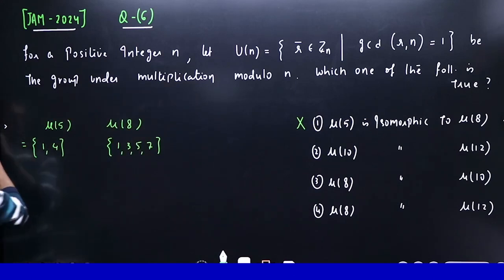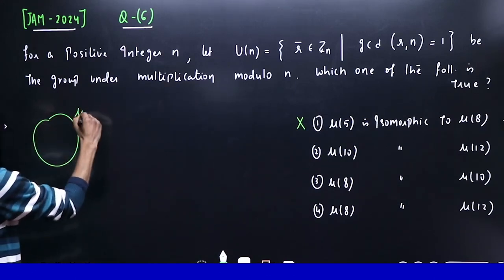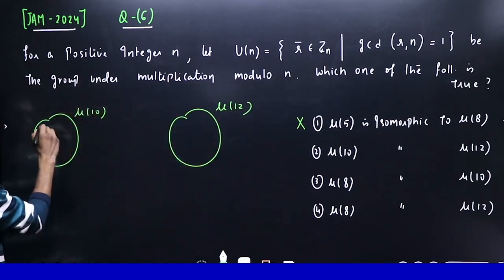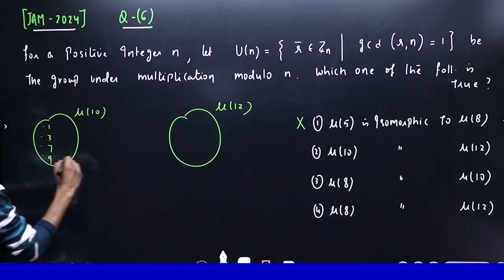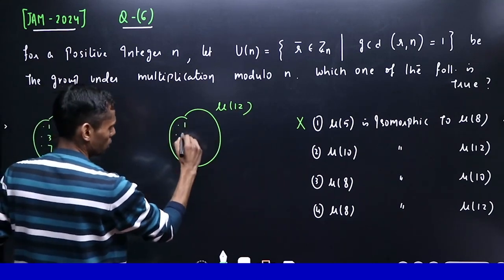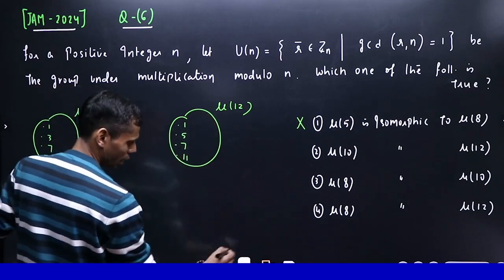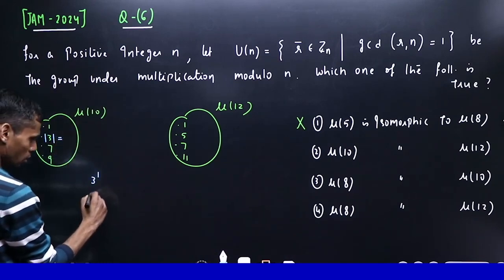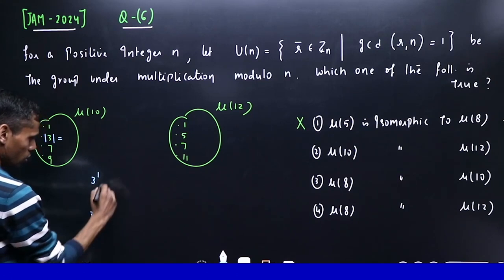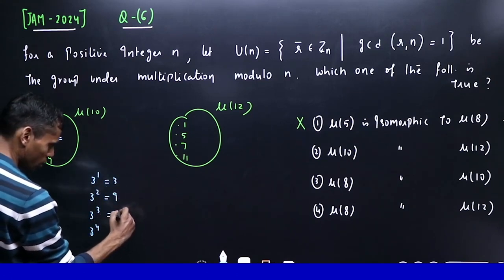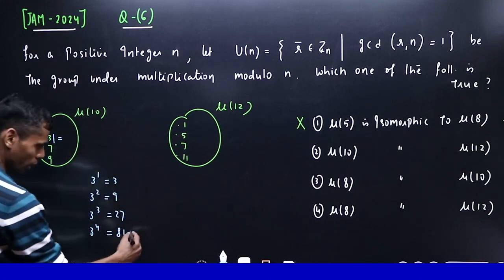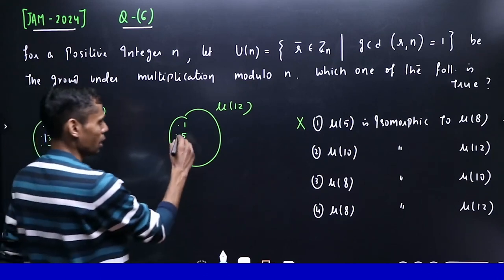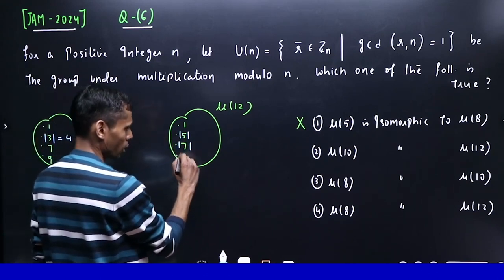Now the second part: μ(10) and μ(12). μ(10) has 1, 3, 7, 9, and μ(12) has 1, 5, 7, 11. If you carefully look, in μ(10), what is the order of 3? Computing: 3¹=3, 3²=9, 3³=27, 3⁴=81. Taking modulo 10, in the fourth power we get 1, so its order is 4.